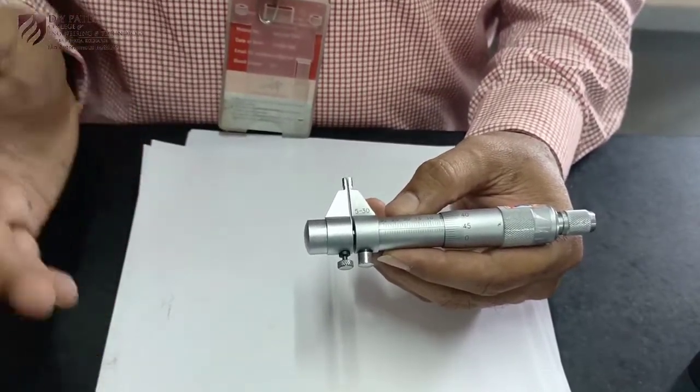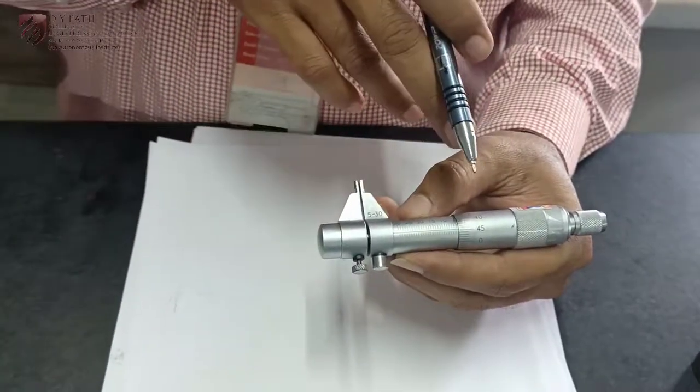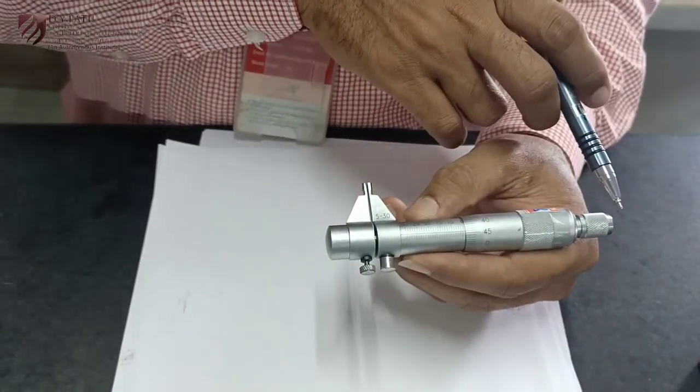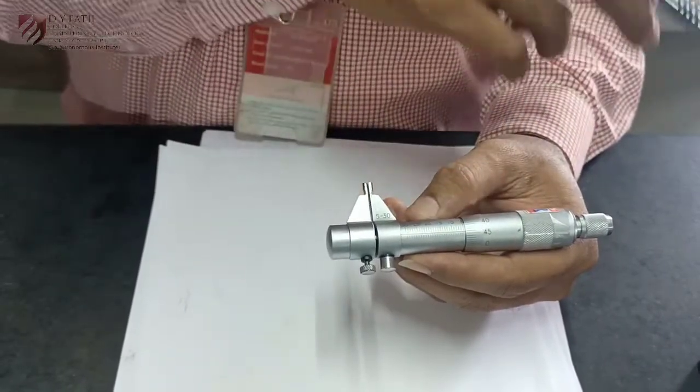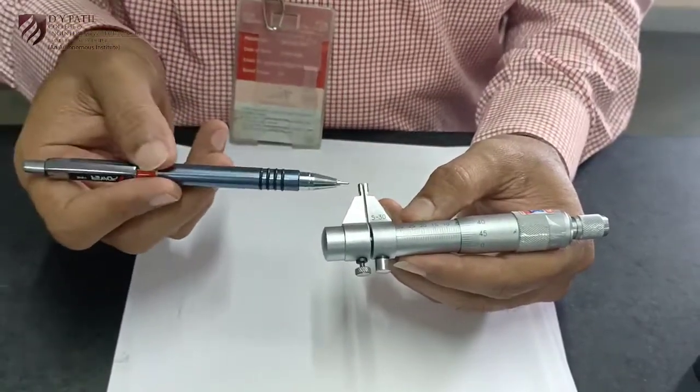Inside micrometer, as we have seen during lecture, has the arrangement of barrel tube, thimble, and ratchet which is in the same way as outside micrometer. Only there is a difference of jaws.